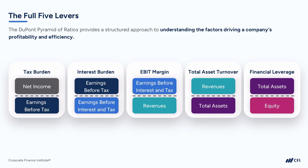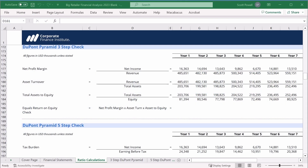Now we know that the way a company manages its tax burden, its interest burden, its operating profits, its asset turnover, and its financial leverage all drive return on equity. Let's actually interpret a three-step DuPont pyramid. I've already filled in the calculations so that we can focus on the interpretation. We'll do it for Big Retailer, then Mid Retailer, and then I want you to have a go with Small Retailer.